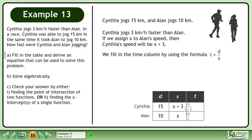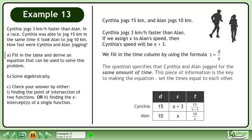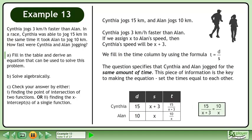We fill in the time column by using the formula: time equals distance over speed. The question specifies that Cynthia and Alan jogged for the same amount of time. This piece of information is the key to making the equation — set the times equal to each other. The equation is 15 over (x plus 3) equals 10 over x.